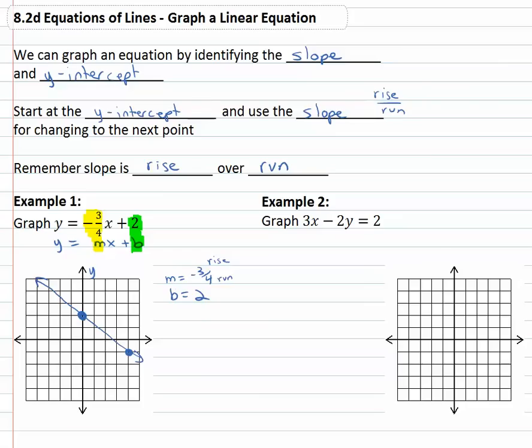Let's try another example, this time we're going to graph three x minus two y equals two. And you'll notice this one is not in the slope intercept form that we like it to be.